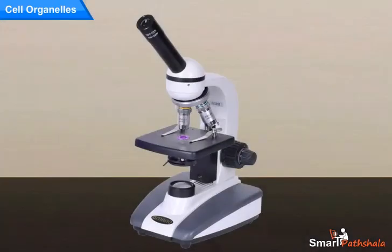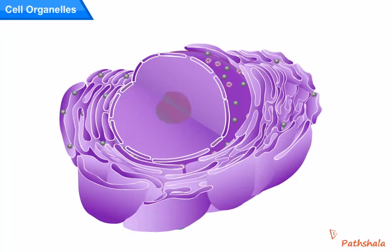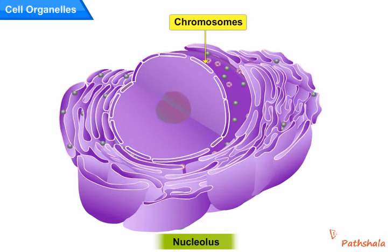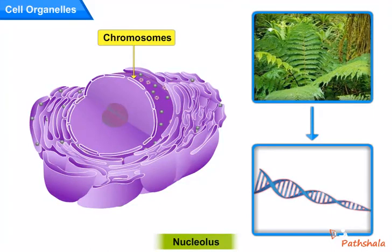When we observe the nucleus of the cell under a microscope, we can see a small spherical body in the nucleus. It is called the nucleolus. In addition to the nucleolus, the nucleus contains thread-like structures called chromosomes. These carry genes and help in inheritance or transfer of characters from the parents to the offspring.